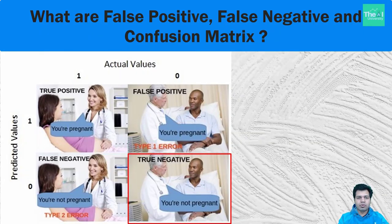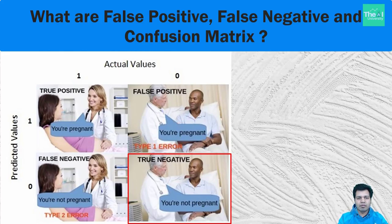Now in the lower right quadrant there is a man and a doctor telling him he is not pregnant. Since men cannot be pregnant and the doctor is indeed telling him he is not pregnant, this case is referred to as true negative — when the test says you don't have it and you actually don't have it.